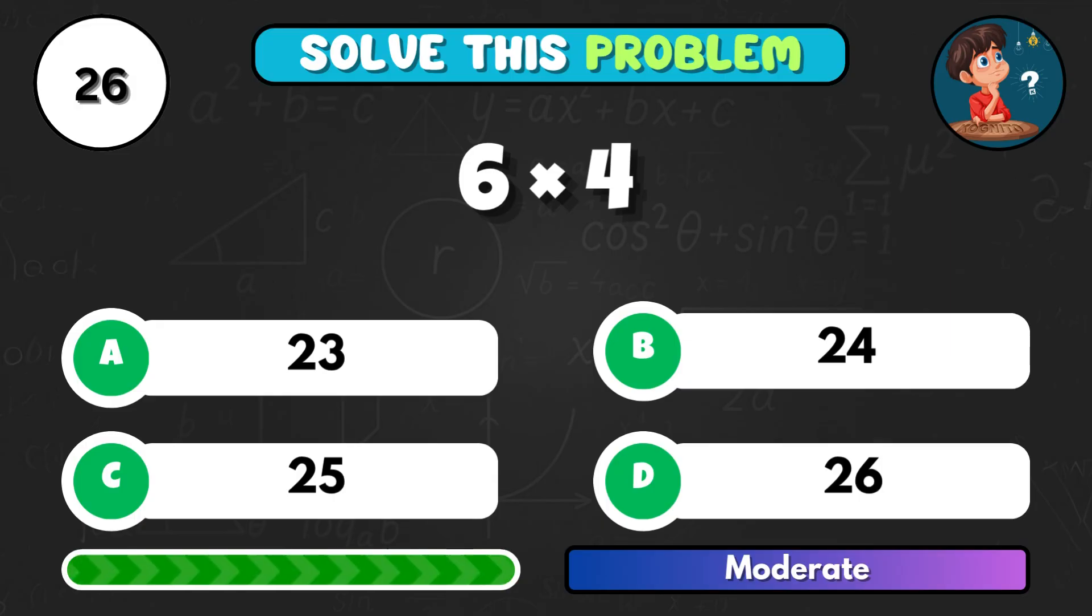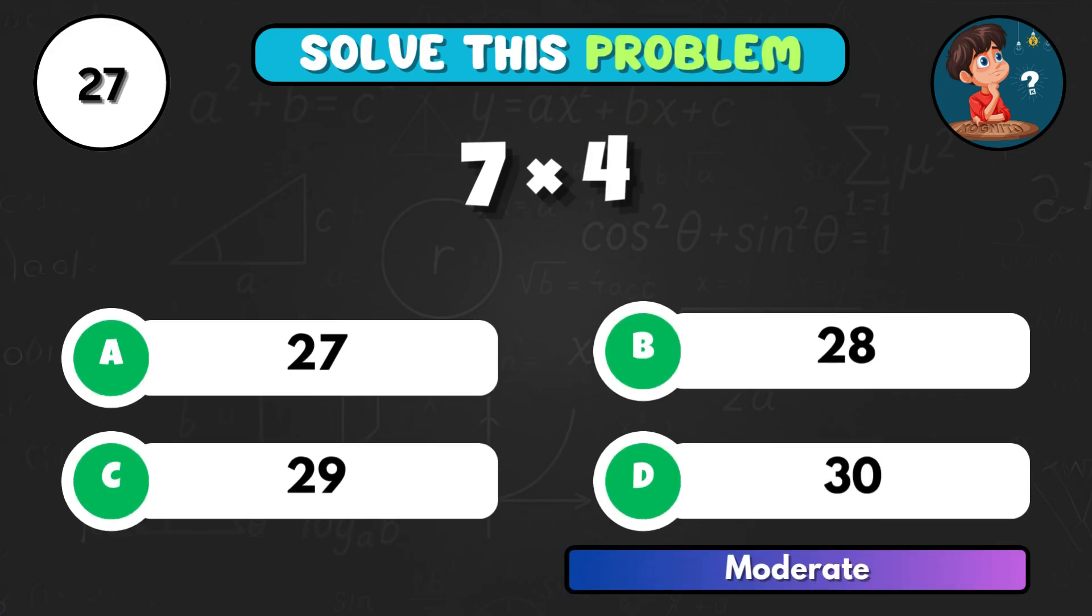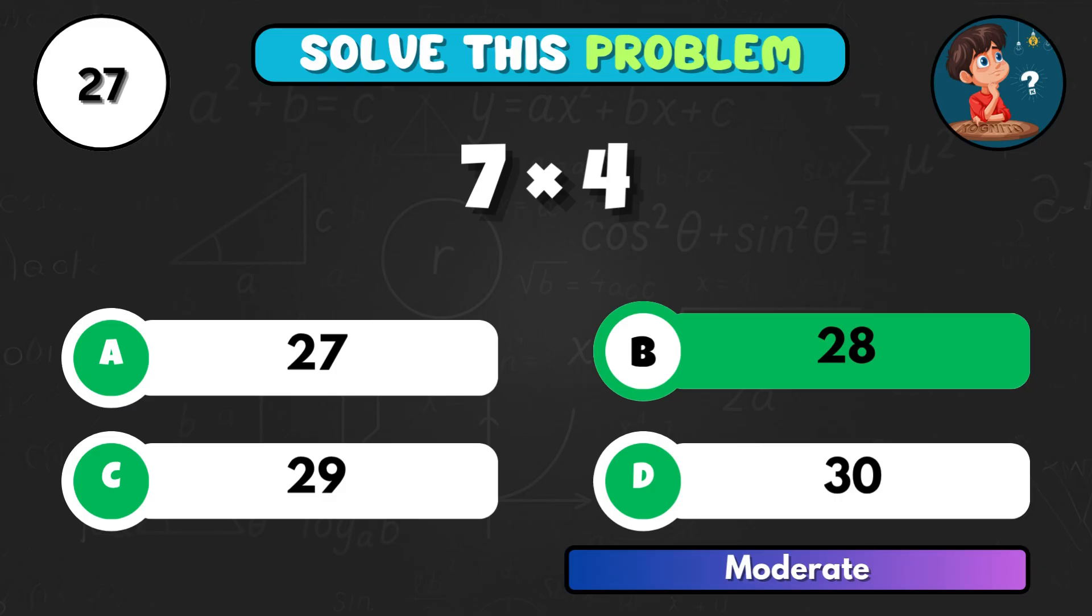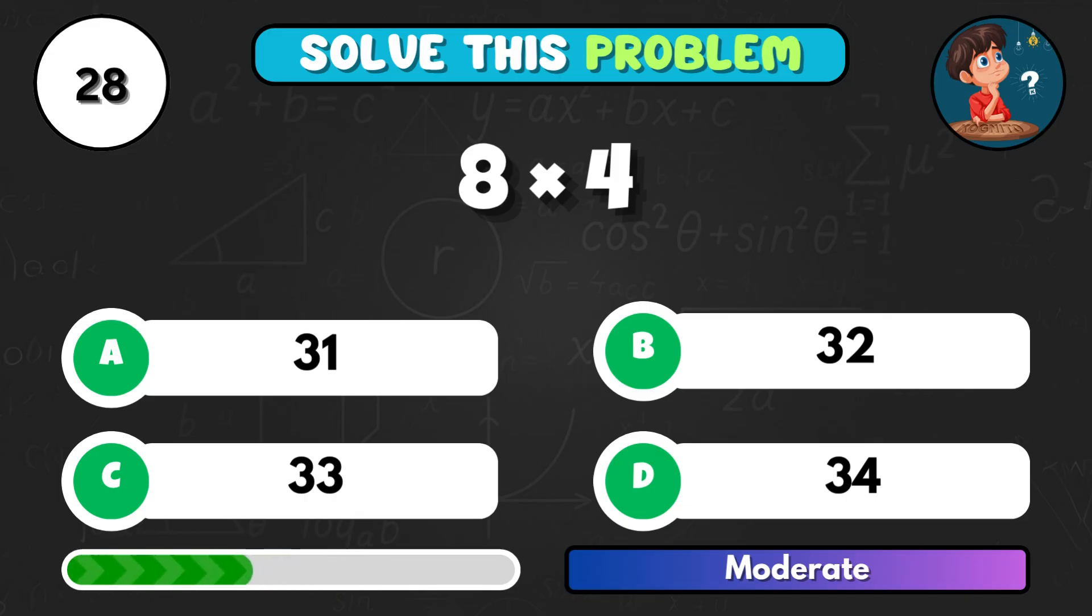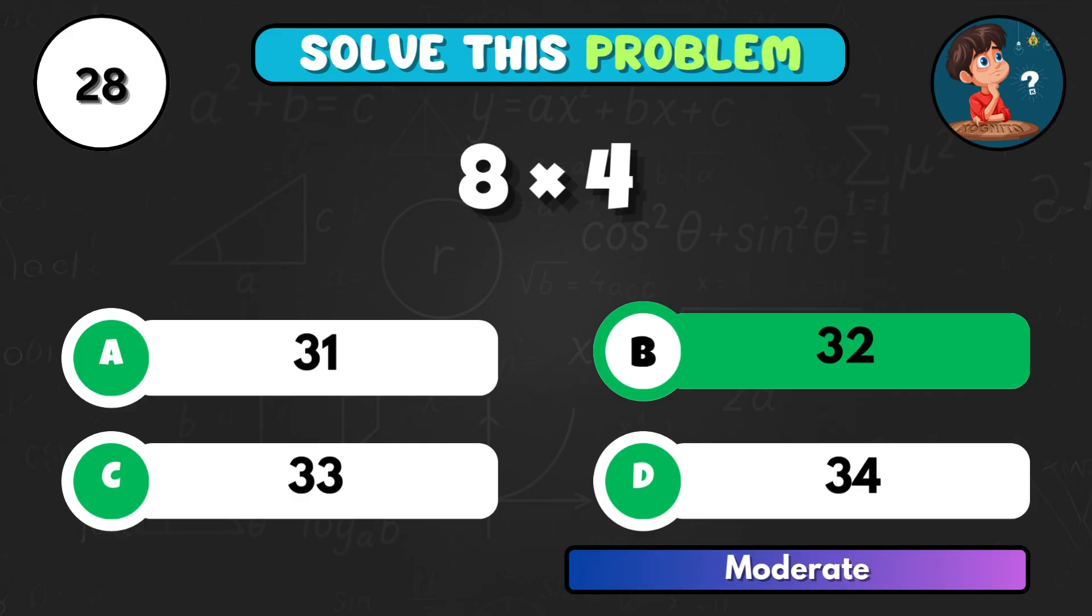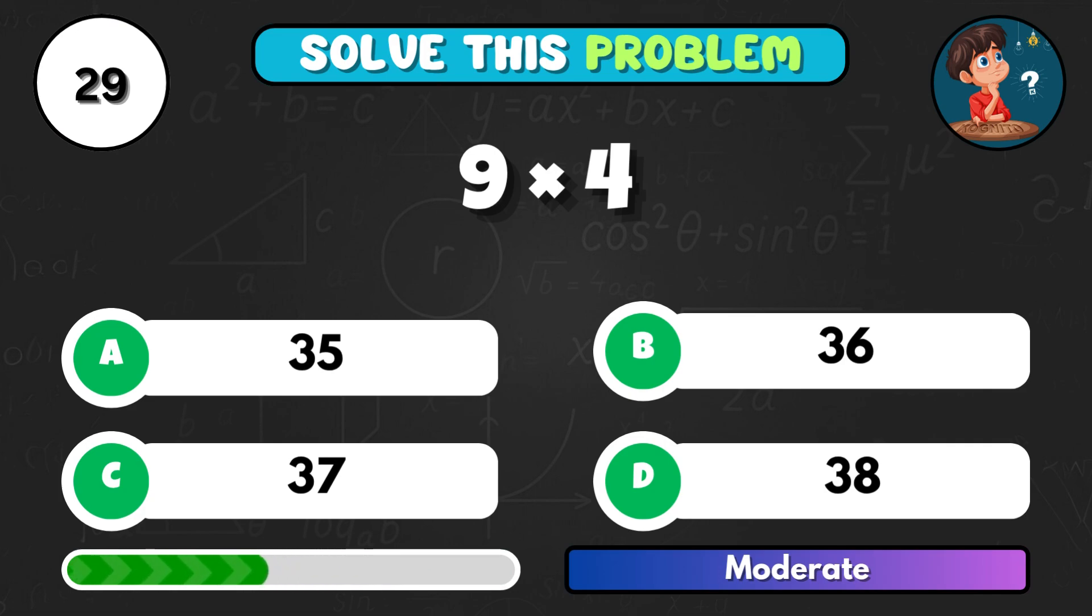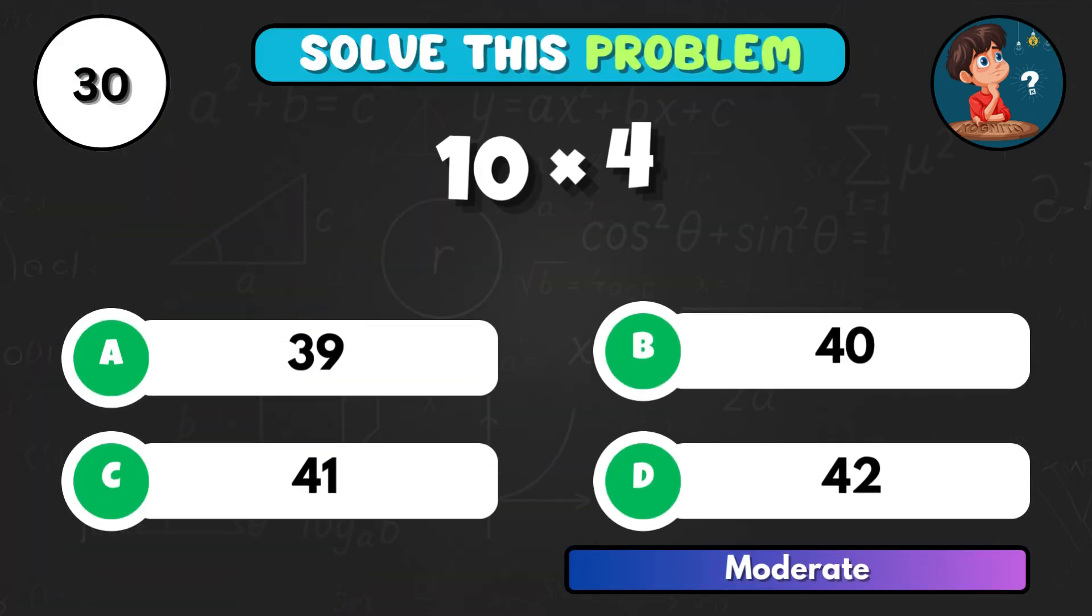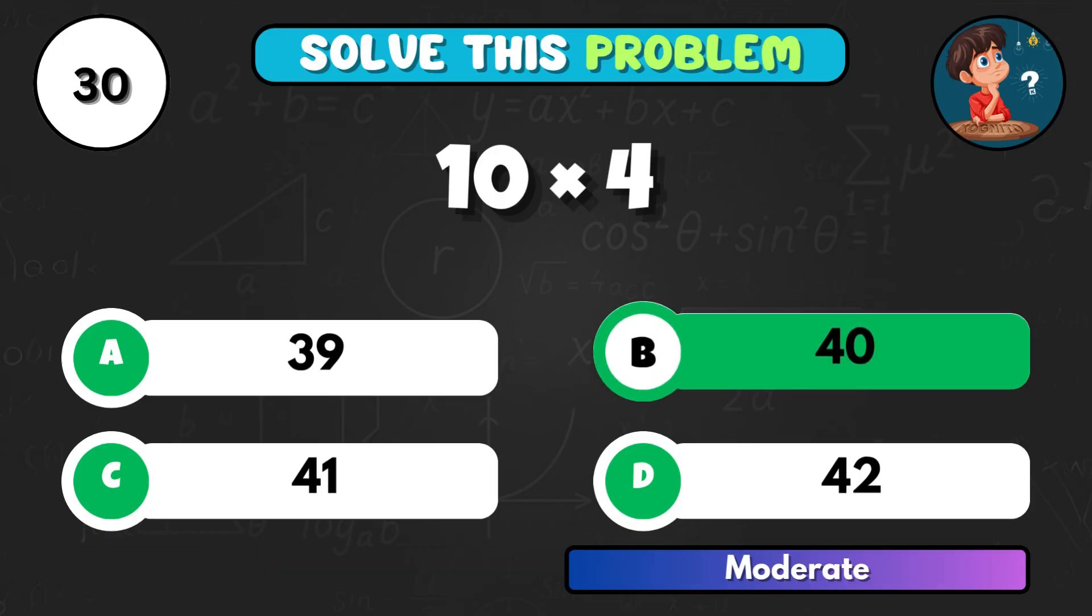6 times 4. Say it out loud. That's B, 24. 7 multiplied by 4. Correct option B, 28. 8 times 4. What do you get? Answer is B, 32. 9 times 4, quick. Correct choice B, 36. 10 times 4 equals... Answer is B, 40.